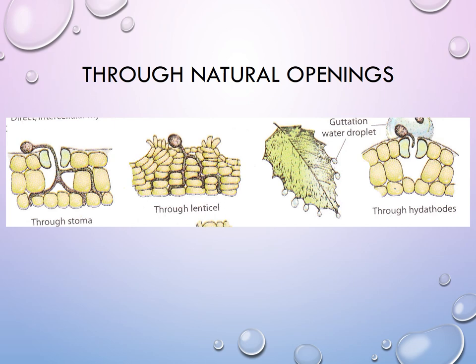For natural openings, there are three types: stomata, lenticels, and hydathodes. Stomata and lenticels are pores for gas exchange. Stomata are present on the underside of leaves. Many bacteria and fungal zoospores enter through stomata — bacteria enter passively, while zoospores may form an appressorium or infection peg. Examples of organisms entering through stomata include Pseudomonas, Solanacearum, Puccinia graminis, and Plasmopara viticola.